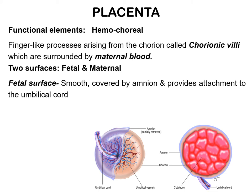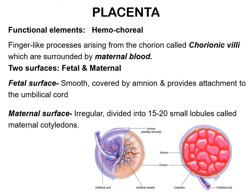The maternal surface on the other hand is rough and dark maroon in colour. This surface is irregular as it is divided by fissures into 15–20 polygonal globules called maternal cotyledons, giving a typical cobblestone appearance.